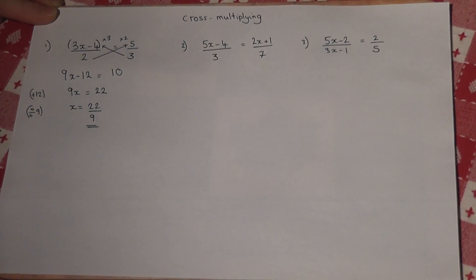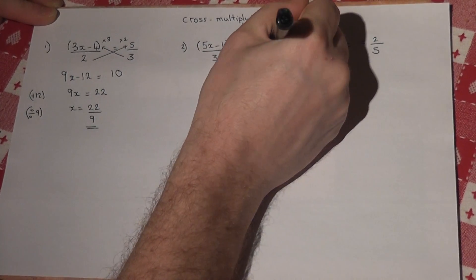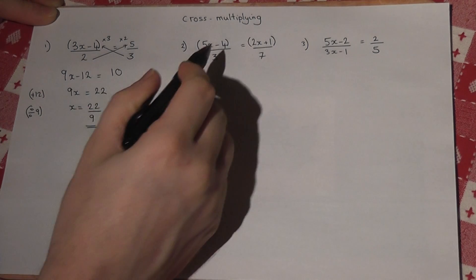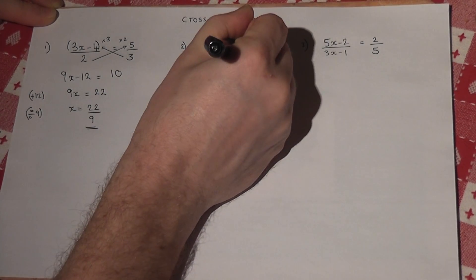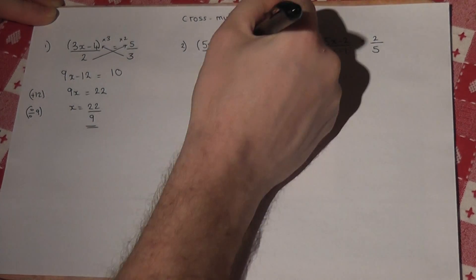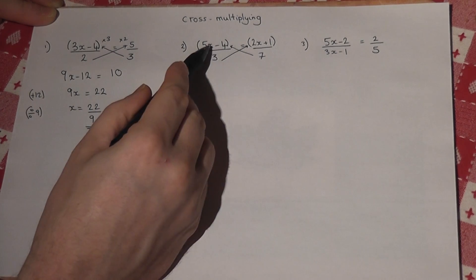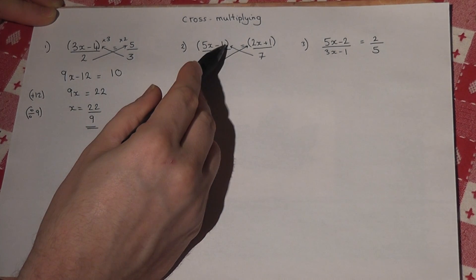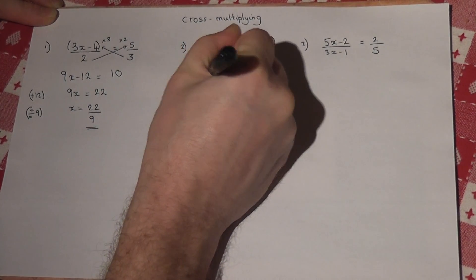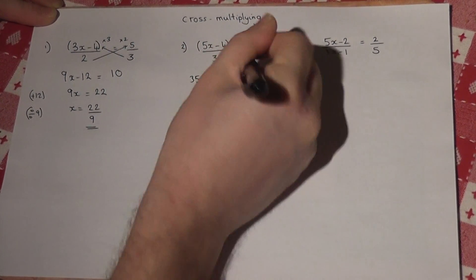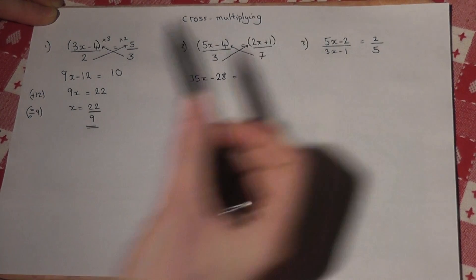I'll place brackets in first this time — it's a pretty good technique to use. Then times the numerators by the other denominator. So I times up by the 7 and up by the 3. So 7 times this bracket here: 7 times 5 is 35, 7 times 4 is 28, so it's 35x take away 28. And then this side has been times by 3, so 6x plus 3.